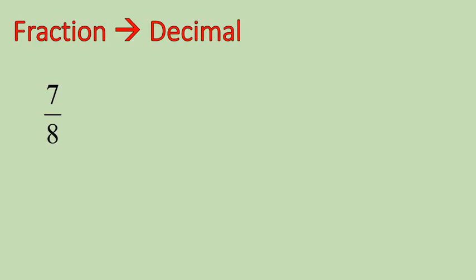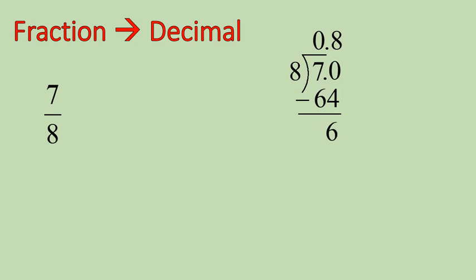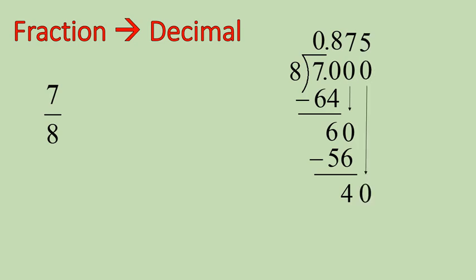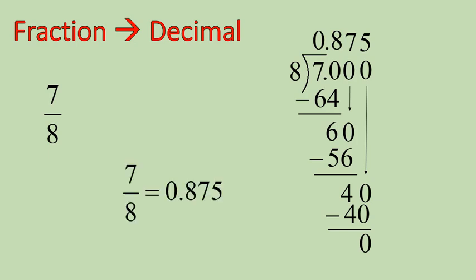If you're given a fraction and asked to convert it to a decimal, it's division. For 7 divided by 8: how many times does 8 go into 7? Zero, so we add a decimal and ask how many times 8 goes into 70 — 8 times, giving 64. Subtract, bring down a zero: 8 goes into 60 seven times, giving 56. Subtract, bring down: 8 goes into 40 five times, remainder zero. That gives us 0.875. You can also use a calculator to check your work.